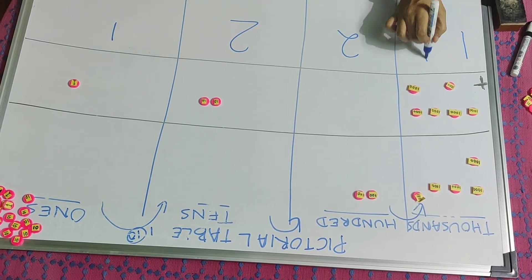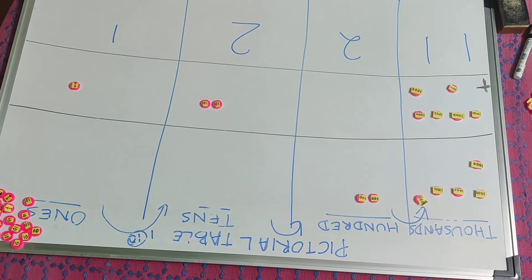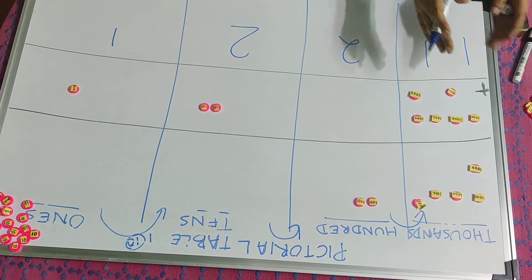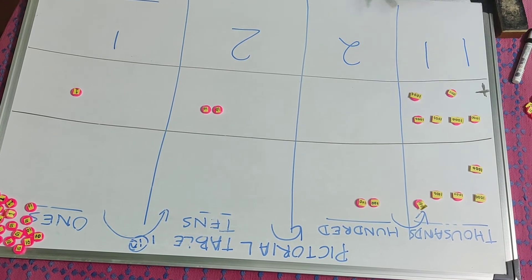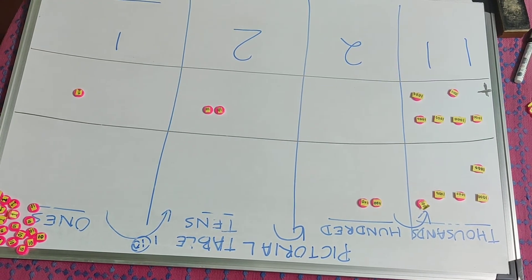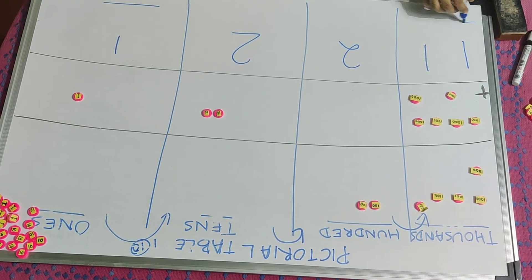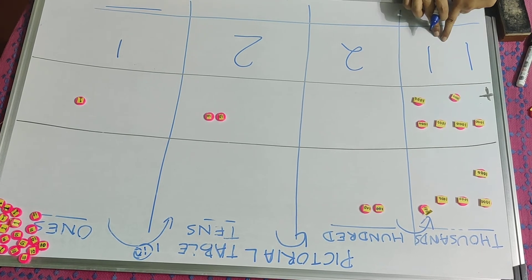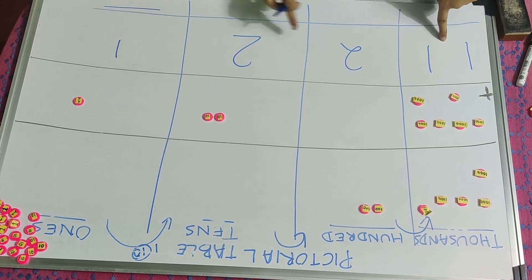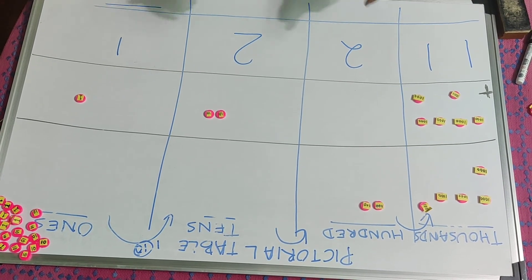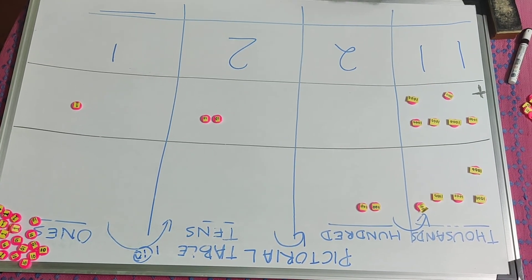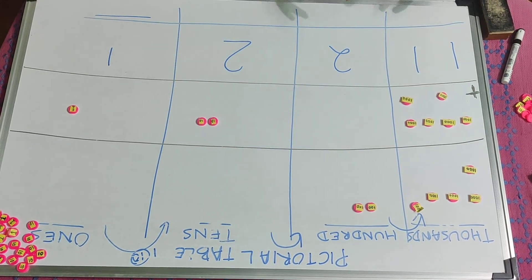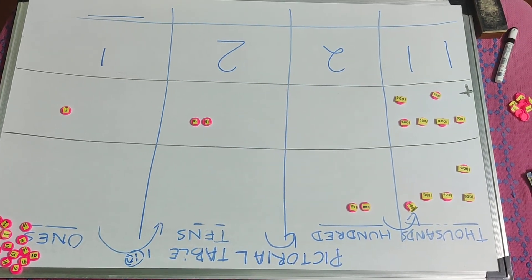Now here I will write eleven thousand together because no more places are there for addition. So my answer is eleven thousand, two hundred and twenty-one. In this way you can add using this pictorial table. Thank you.